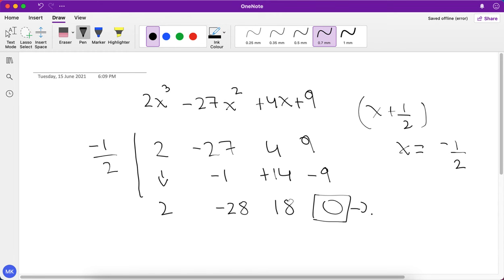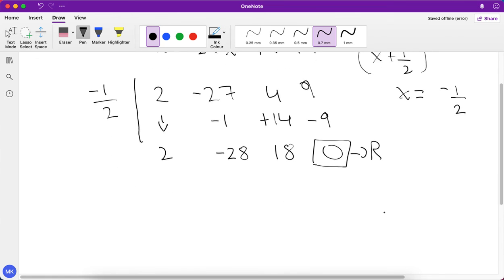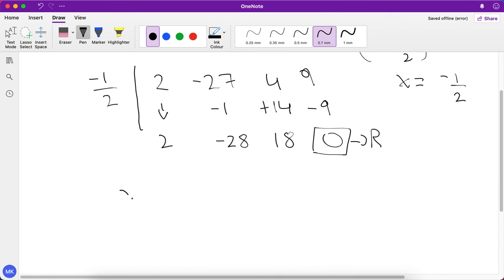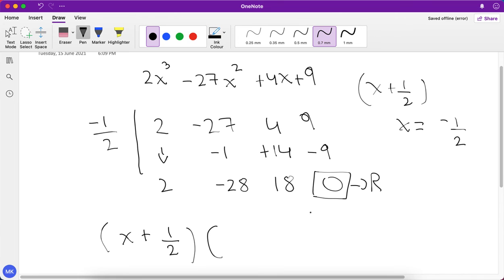So now this is the remainder. So now the answer will be x + 1/2. So if you have to express it as a product of a linear and quadratic factor, you get (x + 1/2)(2x² - 28x + 18).